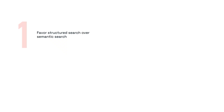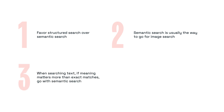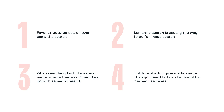So I didn't really answer the question we started with because, well, there isn't one answer — it all depends on what you need and the needs of your users. That said, here are a couple of rules of thumb. Favor structured search over semantic search. Semantic search enables amazing use cases that weren't even possible a decade ago, but can be overused outside of those use cases — structured search is tried, true, and frankly faster. Semantic search is usually the way to go for image searches, but there are other statistical options that search on color, brightness, or symmetry. When searching text, if meaning matters more than precision, go with semantic search; if precision matters more than semantics, go with full-text search. Entity embeddings are often more than you need, but can be useful for use cases like recommendations, fraud detection, and data deduplication.